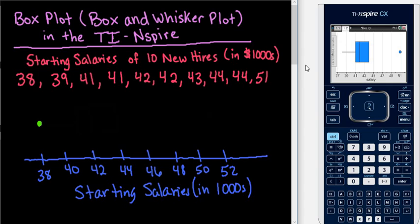So like we said, the minimum was a 38 and our Q1 was a 41. Our median is a 42. Q3 is 44.